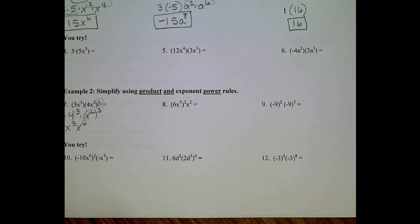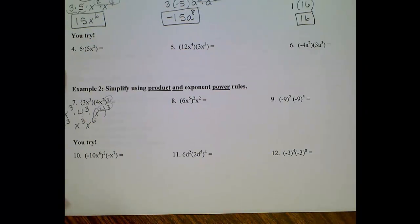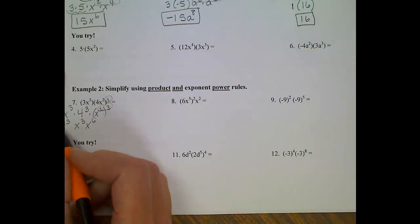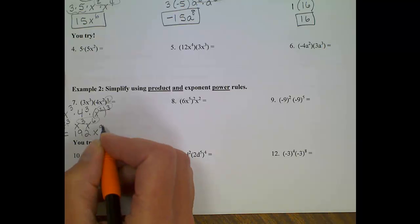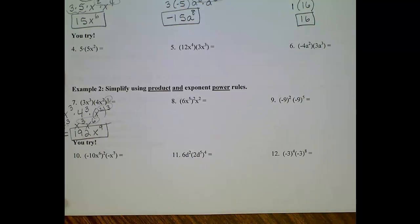One more step, and we will be done. 3 times 4 to the 3rd will give us 192. x to the 3rd times x to the 6th, when we add those exponents, will give us x to the 9th. Final answer is 192x to the 9th.